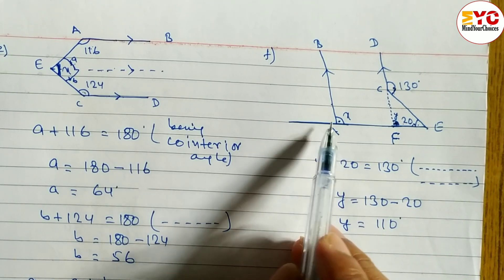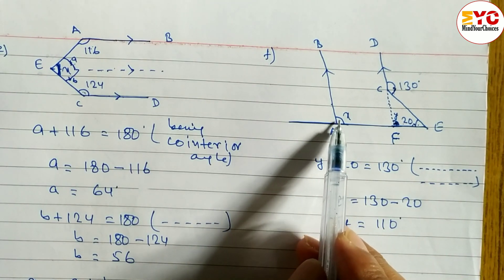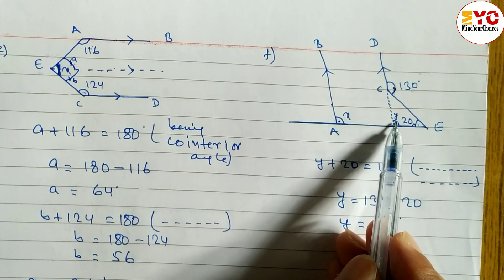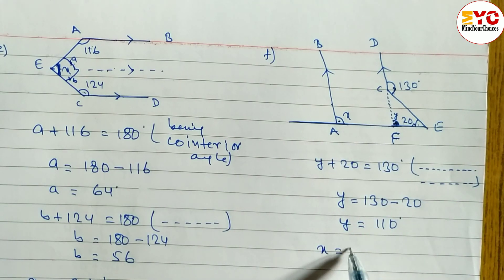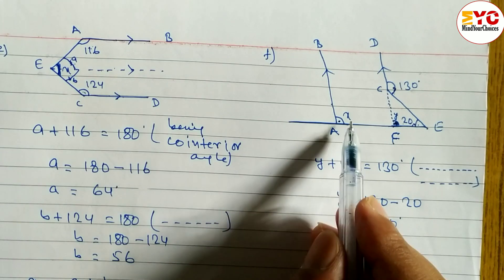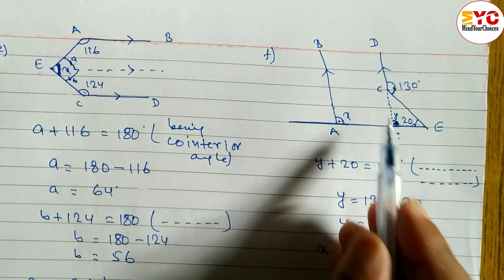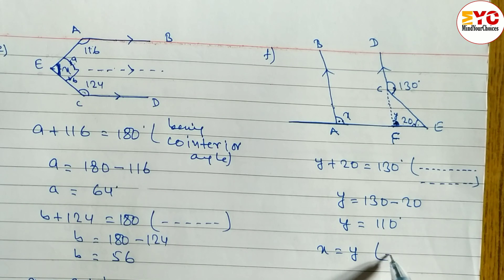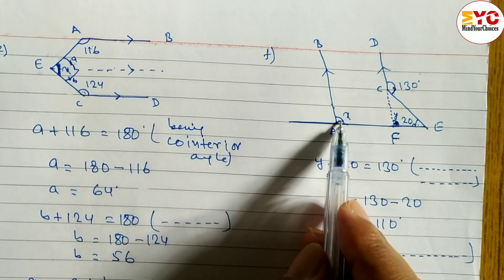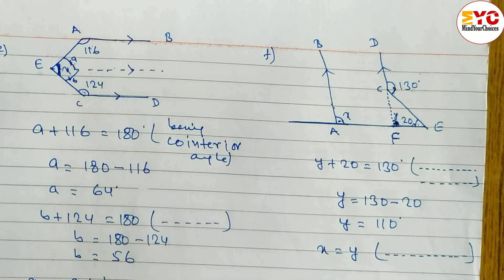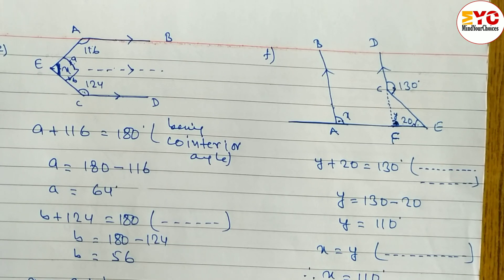Hope you understand up to here. After that, we have to find out the value of x. x is equal to Y because one is inside and one is outside of these two parallel lines. Reason: being corresponding angle. What is the value of Y? It is 110. So x is equal to 110 degrees is the answer.